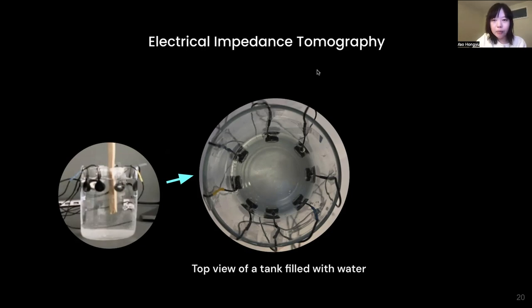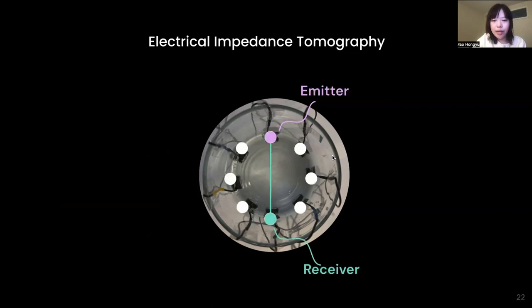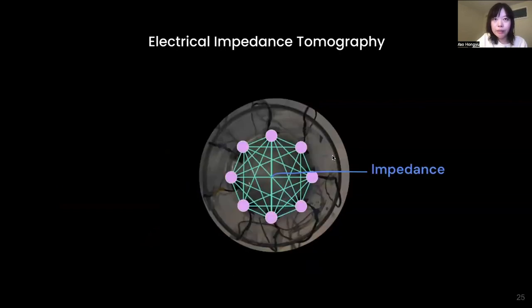Here is the top view of a tank filled with water. Imagine this is the object that we want to image. Electrical impedance tomography involves attaching several pairs of electrodes onto the objects. For each pair, one electrode works as an emitter and one will be the receiver. From analyzing the signals, we will be able to calculate the resulting impedance caused by the passage of the current. We can multiply the receivers as well as the emitters, and from the combination of the impedance values, we will be able to get the 2D reconstructed image of that object.